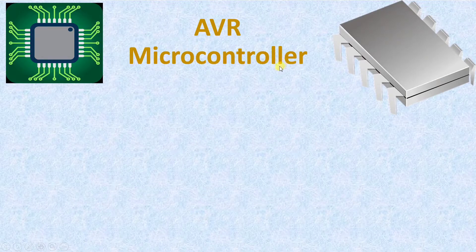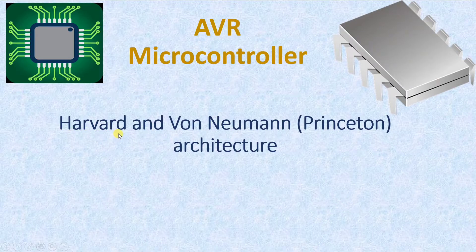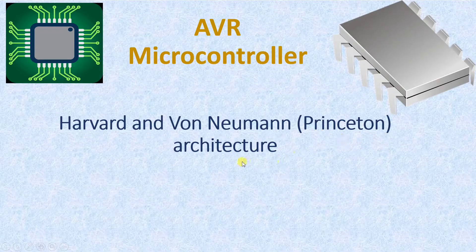Welcome to the AVR microcontroller lecture series. In this video, I will explain Harvard and Von Neumann architecture. The AVR family uses Harvard architecture. We will see the basic differences between Harvard and Von Neumann architecture, where Von Neumann is also referred to as Princeton architecture.